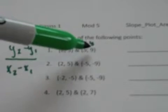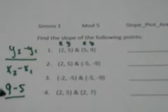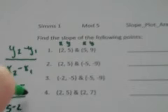So to find the slope I want to take the two y values, which for number 1 are 9 and 5, and I'm going to do 9 minus 5 over my next two values are 5 and 2, so 5 minus 2.